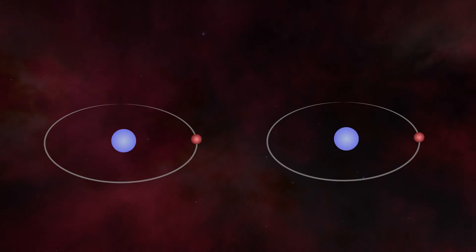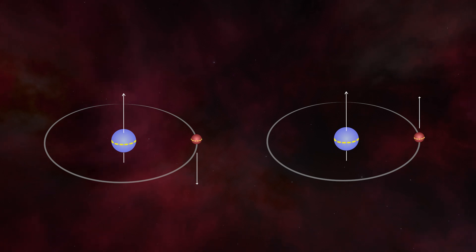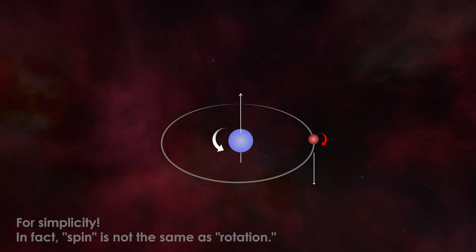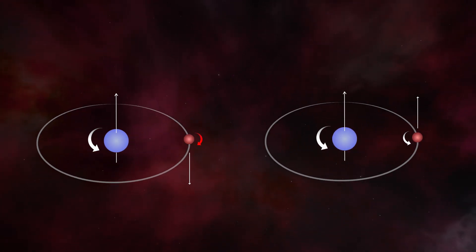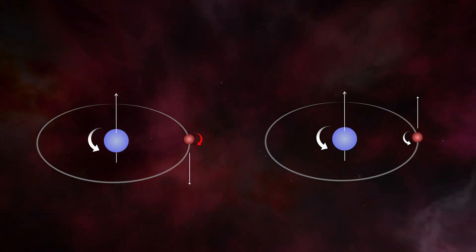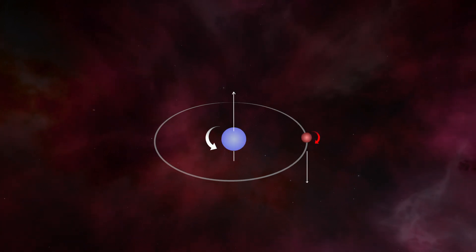In its lowest energy state, the hydrogen atom can have an electron whose spin is either parallel or not parallel to the proton's spin. The simplest way to imagine this is to think of the electron either spinning in the same direction as the proton — say clockwise — or in the opposite direction. The main thing to understand is that an atom with non-parallel spins is indeed in its lowest energy state, while an atom with parallel spins is in a slightly excited state and thus has slightly more energy.